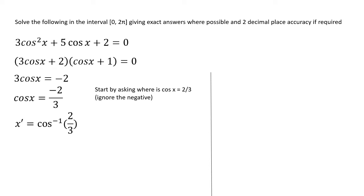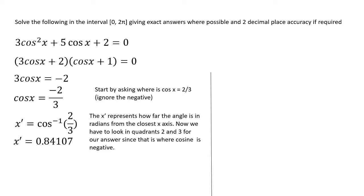We're going to take positive 2 over 3 and find the deviation we need, then look at the quadrants. Here is what I call x prime — the deviation from the x-axis — which I then apply to the required quadrant. For cosine to be negative, I'm looking in quadrants 2 and 3.